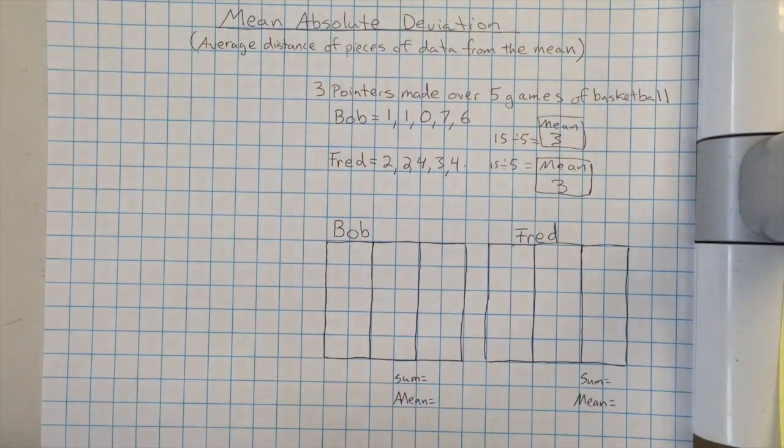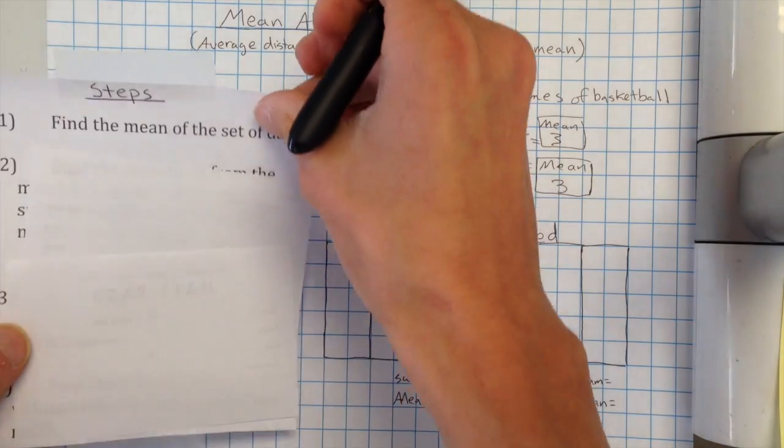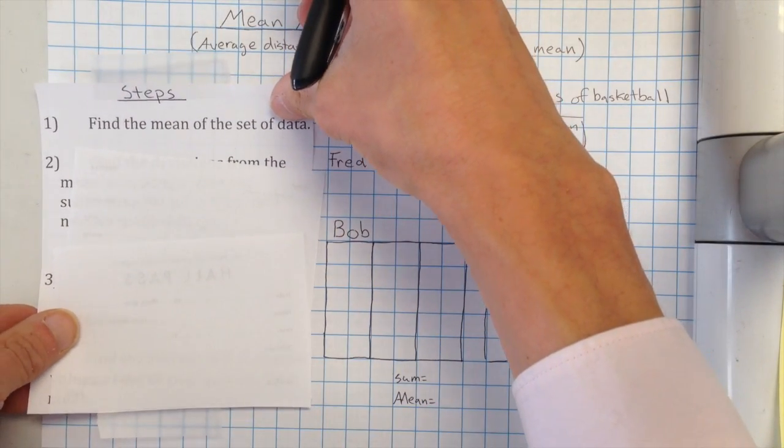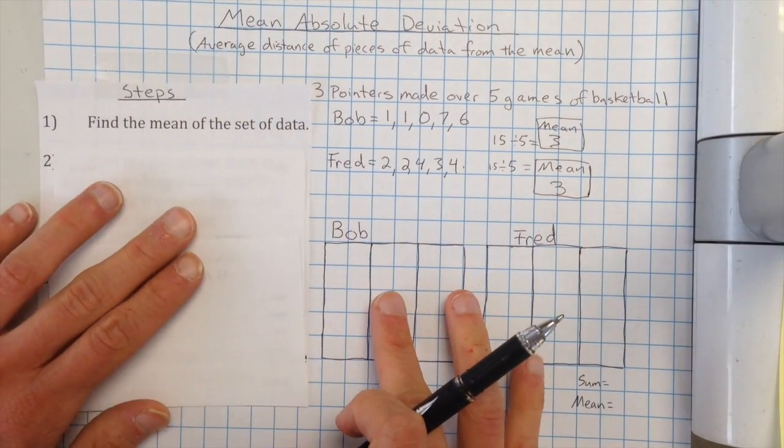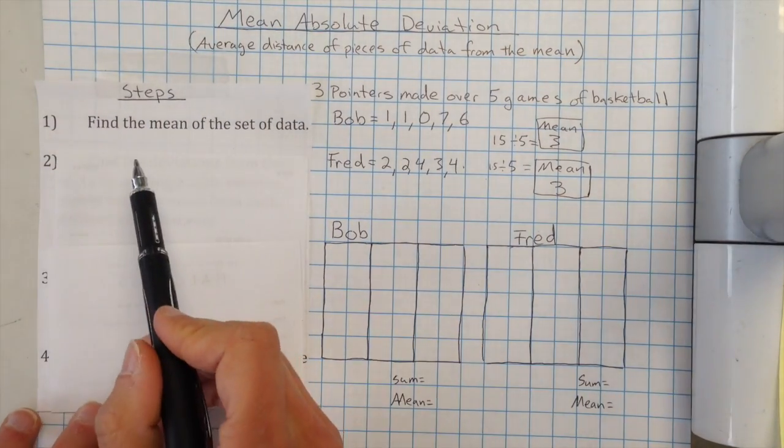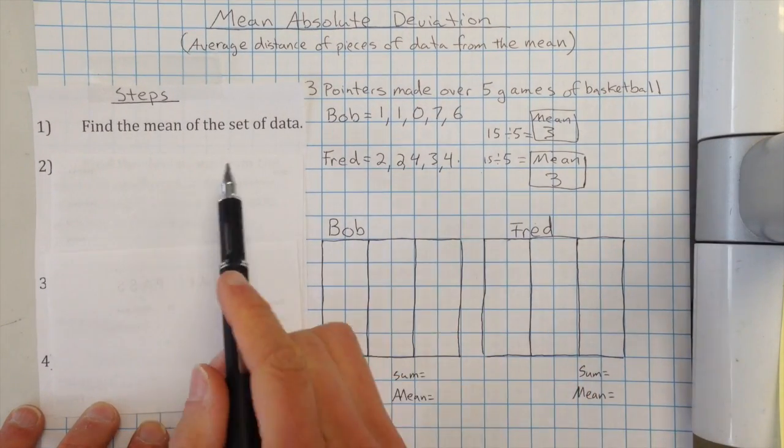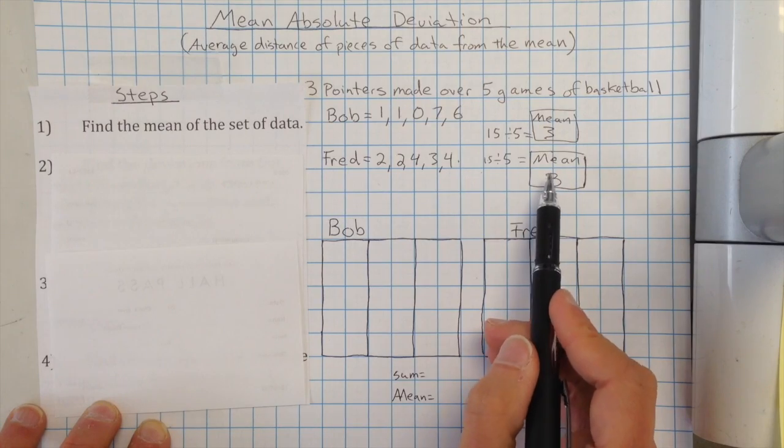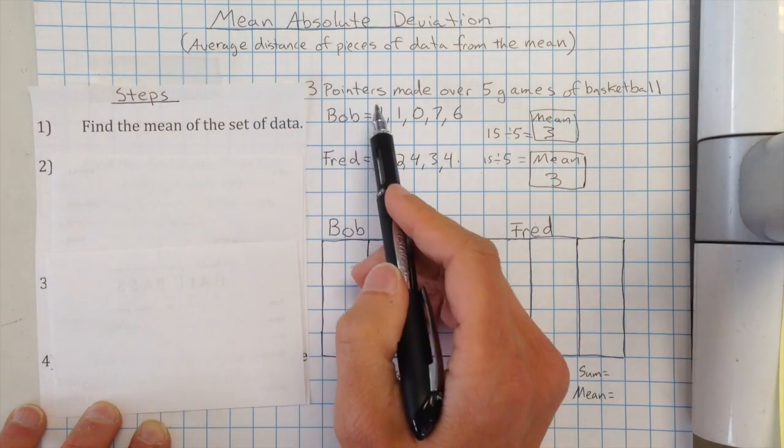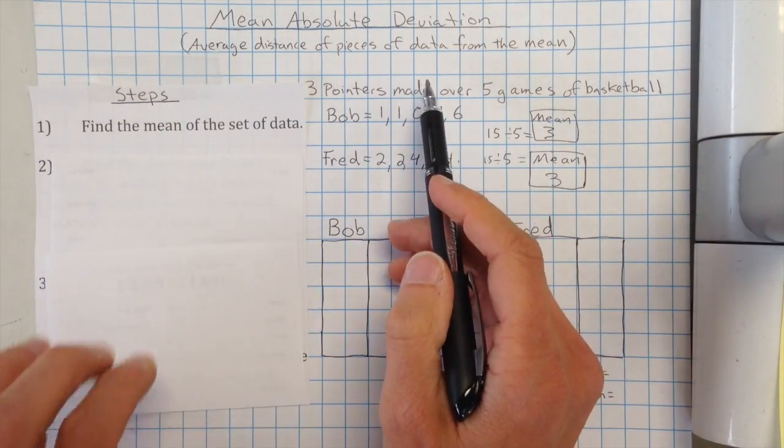Okay, so using the mean absolute deviation sort of shows and describes that. So what we're going to do is we're going to use some steps. So I'm just going to put some steps right here, and we're going to go through them and sort of see how we can calculate all of this. So we're going to start with, it says, find the mean of the set of data. So as you can see, I found the mean for both of them, and that happened to be three. It happened to be the same.